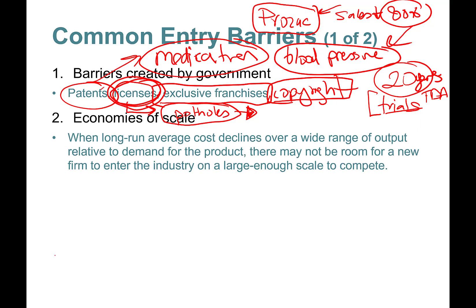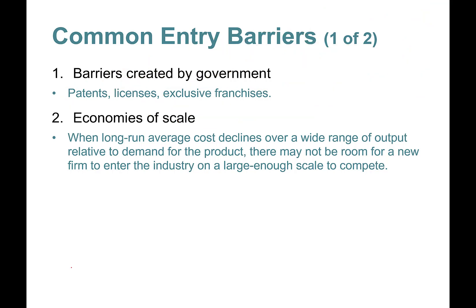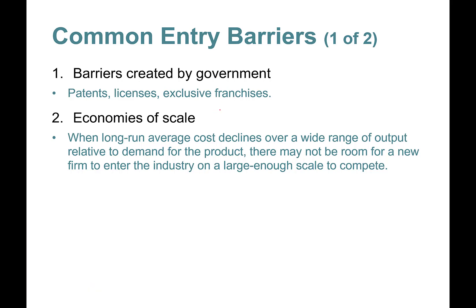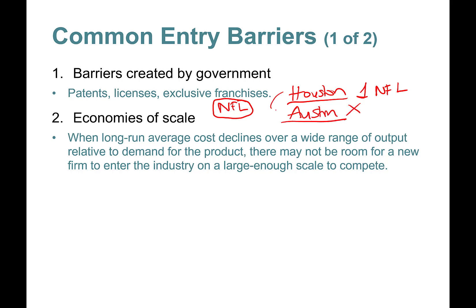The second barrier is economies of scale — basically, there is space for only one company in the market. For example, major NFL teams: Houston is a very big city but has only one NFL team. Austin doesn't have one because its population is smaller. You need a big market for these things.